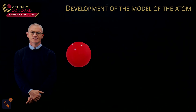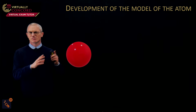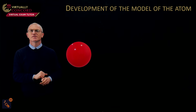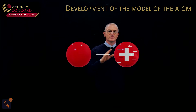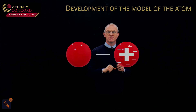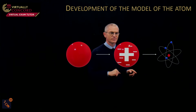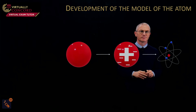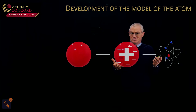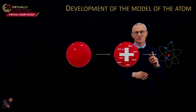Starting with Democritus, he said that atoms existed. Then we move to J.J. Thomson's model — a big sphere of positive charge dotted with electrons throughout. After that comes Rutherford's model, resulting from the helium nuclei gold foil experiment. I'm focusing on the models here because that's what's assessed — and if you're revising, I'd recommend drawing out the models. It really helps.